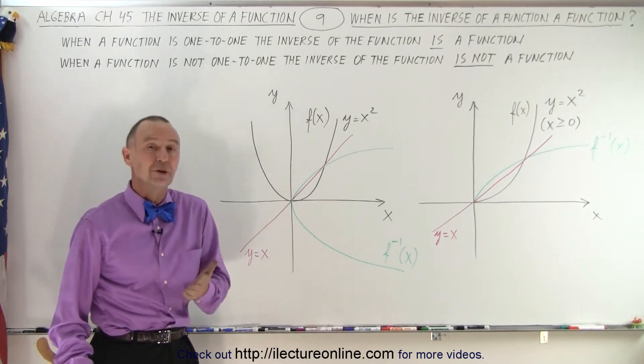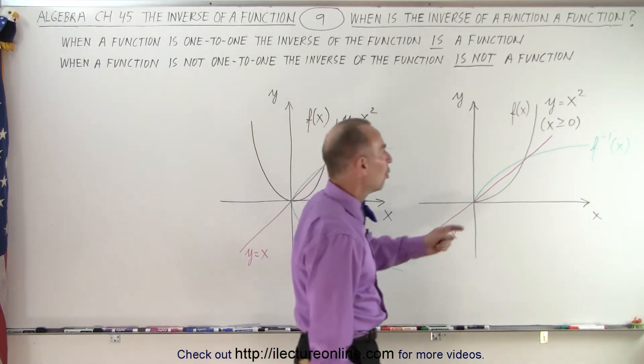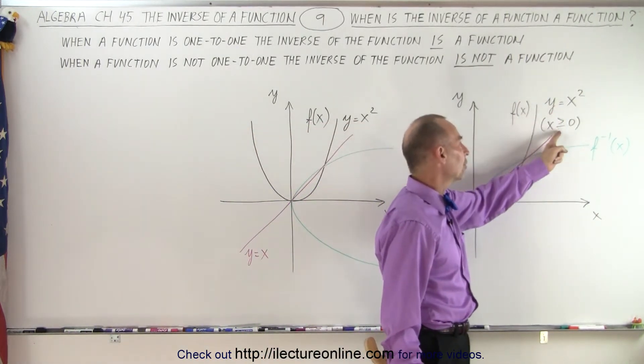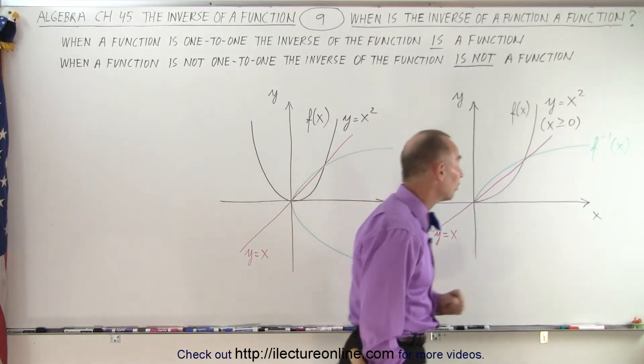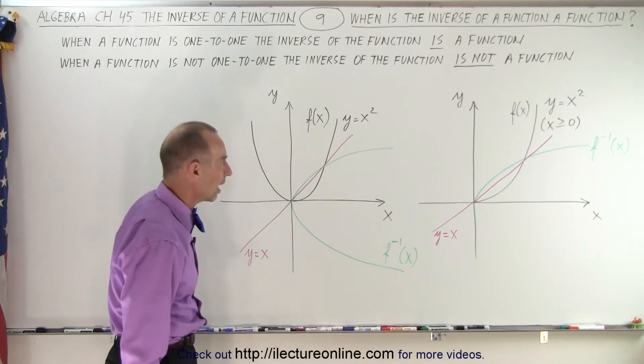And we can check with the vertical and horizontal line tests. We have two functions: y equals x squared where we're limited to x being greater than or equal to zero, and here we have the function y equals x squared with no limitations. All values of x are allowed.